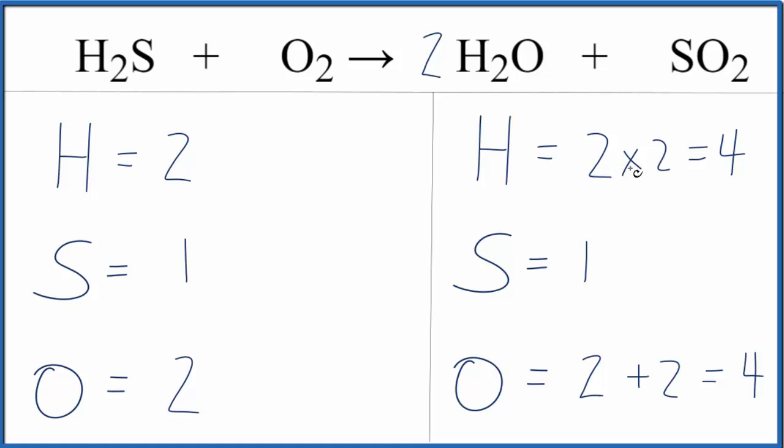But let's fix our hydrogens. So we have four here and two here. We'll put a two in front of the H2S. So two times two, that gives us four. So the hydrogens are balanced.